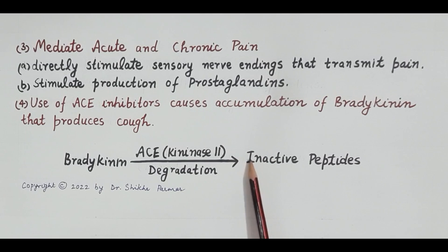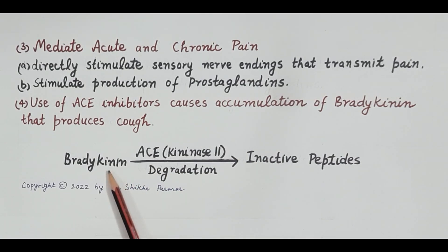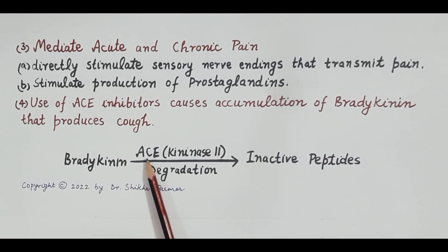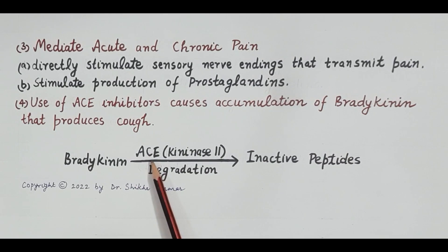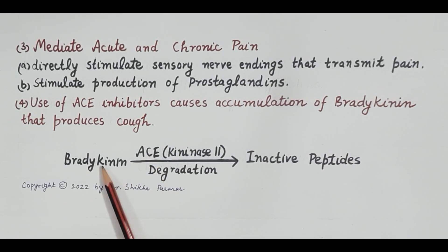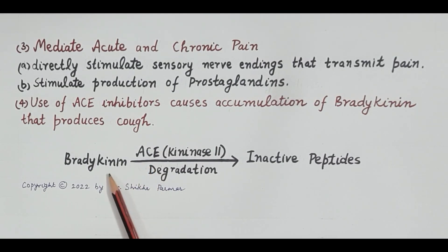This reaction shows how bradykinin is metabolized or broken down to inactive peptides. Bradykinin is metabolized by ACE — the angiotensin converting enzyme, which is also called kinase 2. Angiotensin converting enzyme breaks bradykinin into inactive peptides. If ACE inhibitors are used, bradykinin is not broken down, causing accumulation of bradykinin.